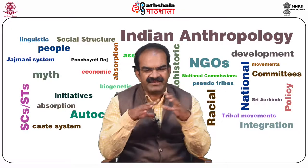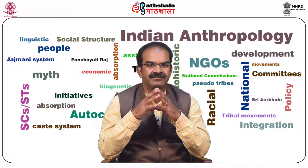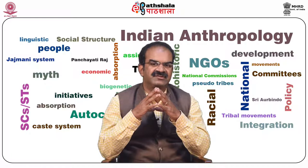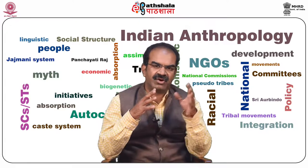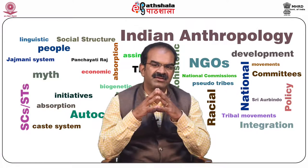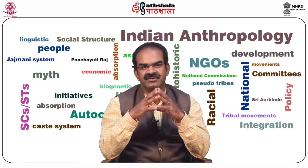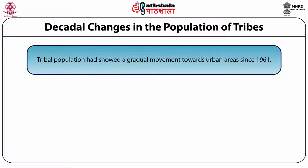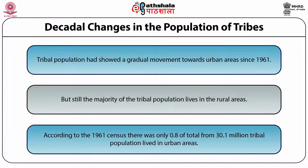If we see the entire tribal scenario in India graphically, it shows that there is some kind of increase in the tribal population. Since post-independence India, there is a decadal growth of tribal population and the whole population now stands at 8.2%. The tribal population has showed a gradual movement towards urban areas since 1961. But still, the majority of the tribal groups and population lives in rural and forested zones and other remote areas. According to the 1961 census, there was only 0.8% of the total population — 30 million tribal population — in urban areas.